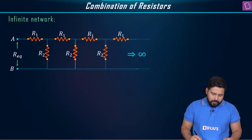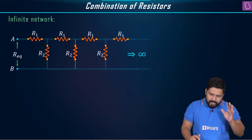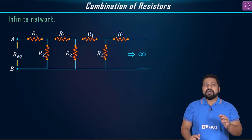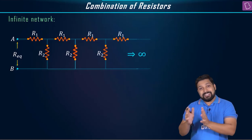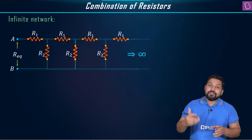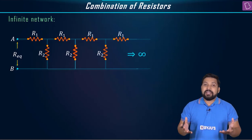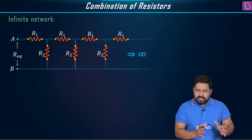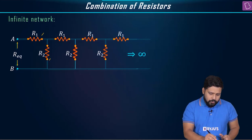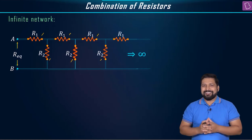How do we solve this kind of problem? What we observe in any question based on this type of network is that there is a particular pattern, and that pattern repeats itself, and this repetition goes on up to infinity — which is why it is called an infinite network problem. In this scenario you have R1 and R2, then again R1 and R2, R1 and R2: the pattern keeps repeating.